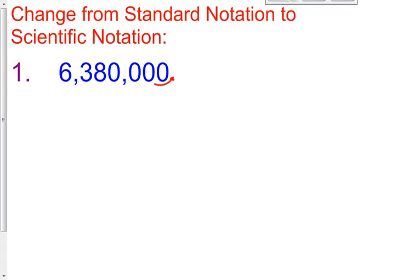So we're going to move the decimal 1, 2, 3, 4, 5, 6 places. In scientific notation, there's going to be one digit to the left of the decimal point, and everything else is to the right. That's why the decimal point goes right here, with 6 being to the left, and the 3, 8, and remaining zeros going to the right.